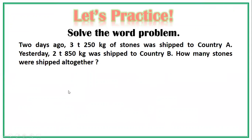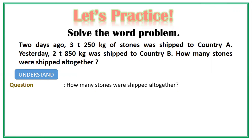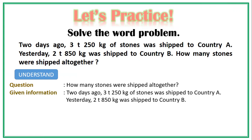Now let us have a practice. Solve the word problem: two days ago, 3 tons and 250 kilograms of stones was shipped to Country A. Yesterday, 2 tons and 850 kilograms was shipped to Country B. How many stones were shipped altogether? The question is: how many stones were shipped altogether? The given information: Country A received 3 tons 250 kilograms, and Country B received 2 tons 850 kilograms.